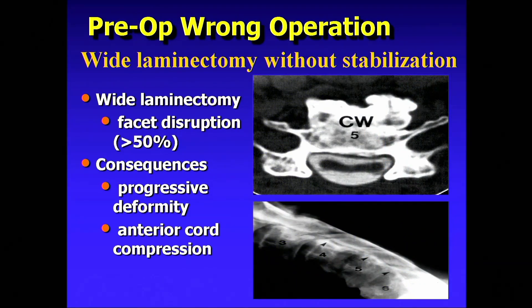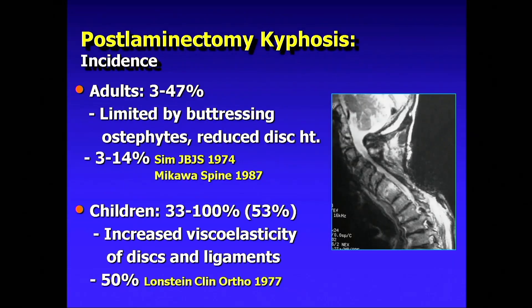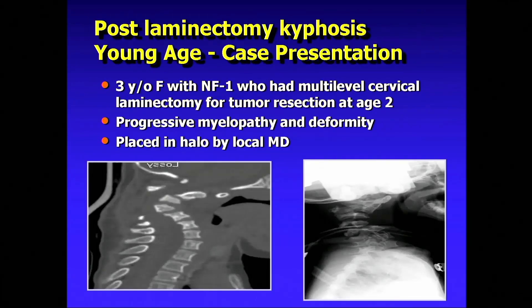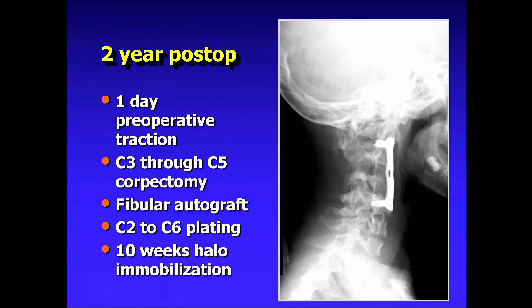Laminectomies — it's amazing, I still see post-laminectomy kyphosis. I don't know where they're coming from, but it's not that uncommon. I probably see two or three a year. Who are they? Usually adults — wider laminectomies. The highest risk group are young people. If you're doing a child or a younger person, be very careful with how much you decompress, and you should probably consider instrumenting them. Here's a three-year-old with NF who had surgery and ended up with a C-shaped deformity. The good news with these cases: you put them in halo traction and the head goes right back.